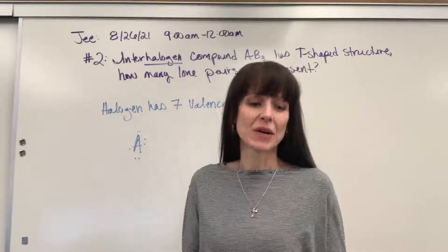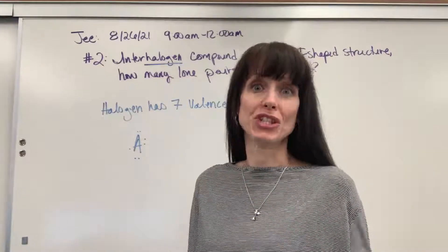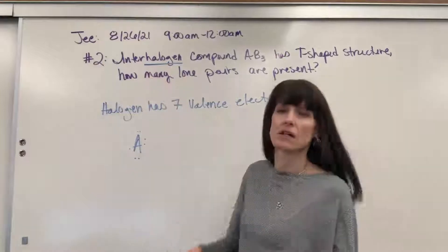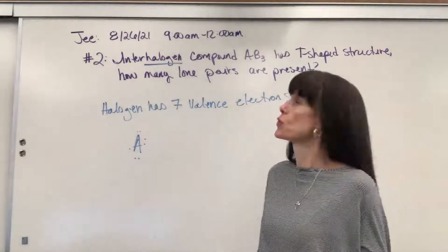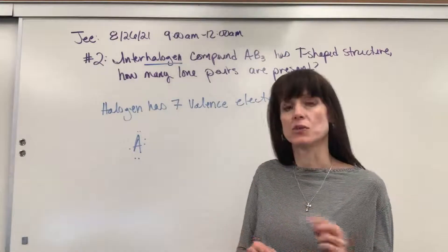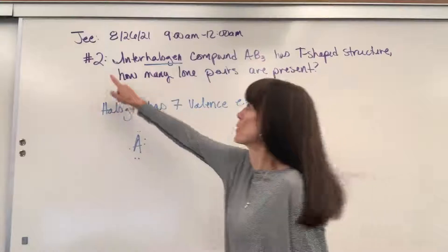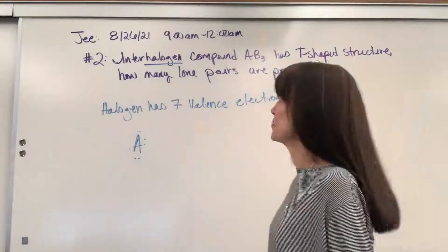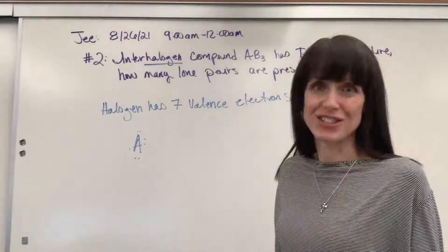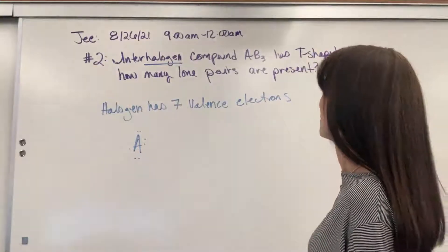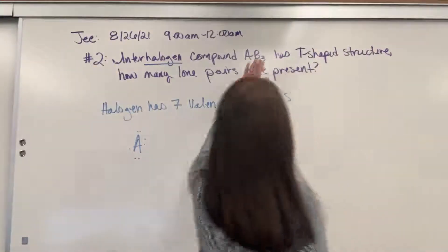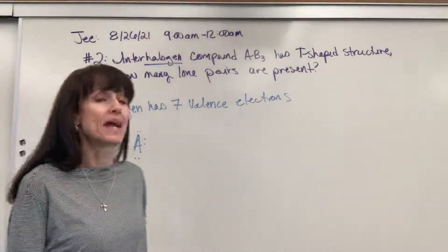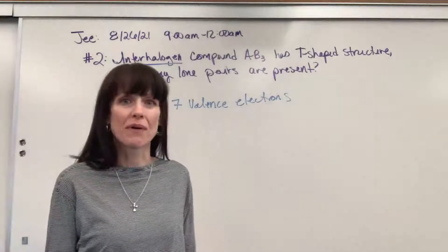Hi everyone. I'm going to go over some G questions with you. This is the test on August 26, 2021 — the 9 a.m. to 12 o'clock — and we're going to go over question number two. Let me read it to you. It says: interhalogen — and that's a key word — interhalogen compound AB3 has a T-shaped structure. How many lone pairs are present?